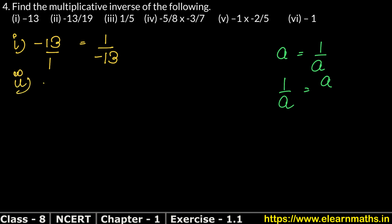Now let's look at the second part: minus 13 upon 19. The denominator 19 comes to the numerator, and minus 13 which was in the numerator becomes the denominator. So the multiplicative inverse is 19 upon minus 13. Simple.